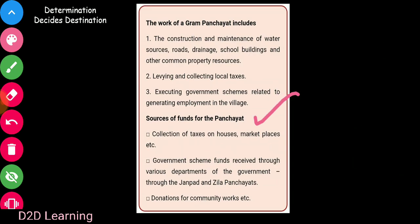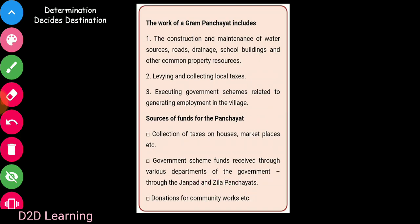Now, the source of funds. You can collect taxes — first thing is you can collect taxes. So house taxes or marketplace taxes, you can collect taxes. The government scheme funds are received through various departments of the government, through Janpad and Zilla Panchayat.